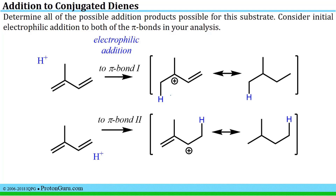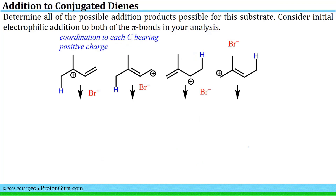First, electrophilic addition to pi bond 1: the pi bond electrons are donated to the proton, leading to this initially formed carbocation, which has an additional resonance contributor — move this pi bond into this space and that leaves the positive charge on the carbon at the right. Likewise, electrophilic addition to pi bond 2 gives this initially formed carbocation with an additional resonance contributor, moving the pi bond and leaving a positive charge on the leftmost carbon. Once we have each of the four possible resonance contributors, we know which carbons have partial positive character, and we can do the second step — coordination of the anion to the cationic carbon sites.